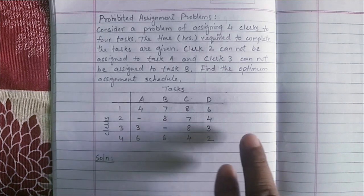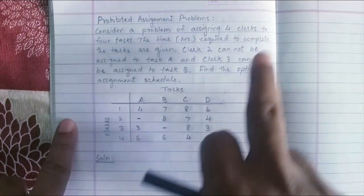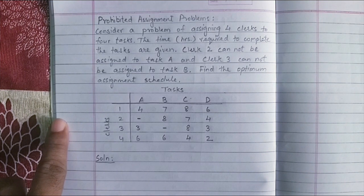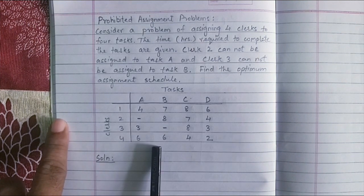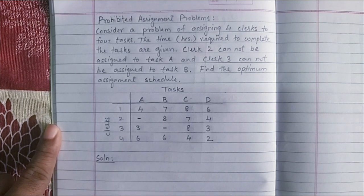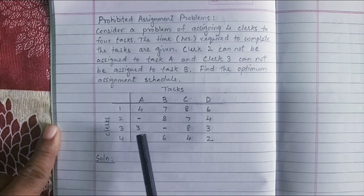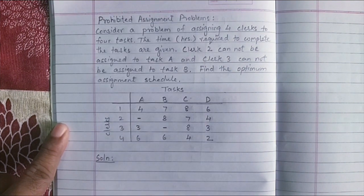Now let us take an example here. We have a problem which says, consider a problem of assigning four clerks to four tasks. The time which is given in hours required to complete the task is given in this matrix below. Clark 2 cannot be assigned to task A and Clark 3 cannot be assigned to task B. We have to find the optimum assignment schedule. Now as you can see, this is a minimization problem.